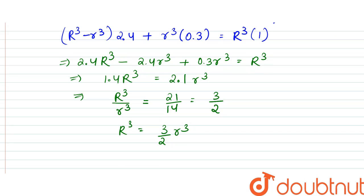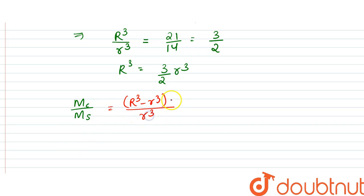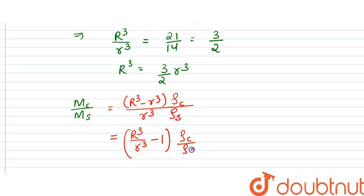Now we find the ratio of mass of concrete to mass of sawdust. That equals (R³ - r³) × ρ_concrete divided by r³ × ρ_sawdust. This can be written as (R³/r³ - 1) × (ρ_concrete / ρ_sawdust) = (3/2 - 1) × (2.4 / 0.3) = (1/2) × 8.